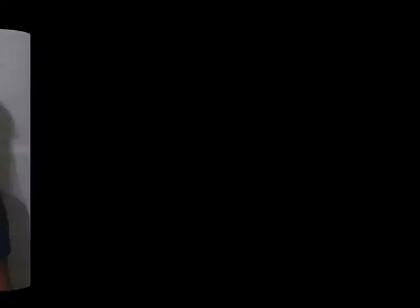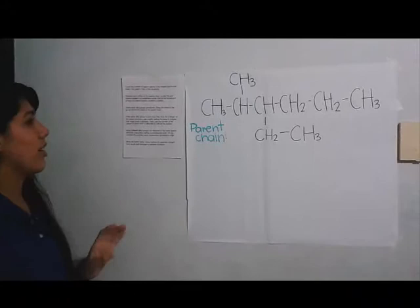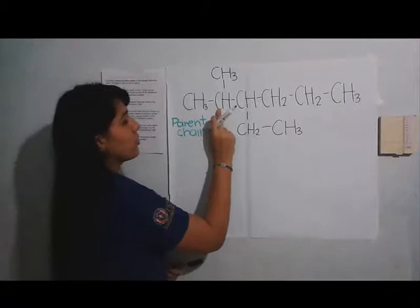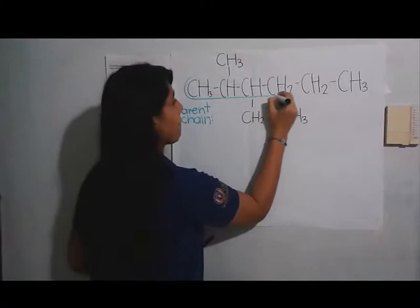The first step is to count the number of carbons in the longest continuous chain. In this example, the longest continuous chain has one, two, three, four, five, and six carbons, so this is a hexane.